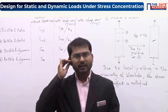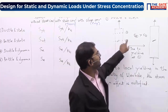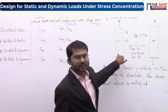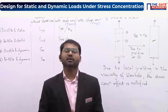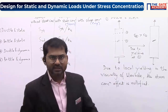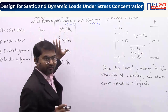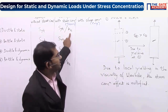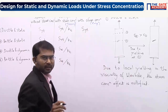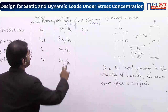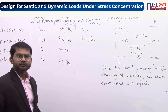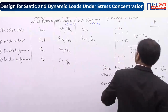Can we expect this similar type of local yielding in a brittle material under static loading? Never. Brittle material can never undergo any sort of plastic deformation. So in the ductile-static case, though theoretically strength should decrease by Kt, due to local yielding the stress concentration effect is nullified and strength remains Syt. But for brittle-static, this local yielding cannot happen, so the strength becomes Sut/Kt.